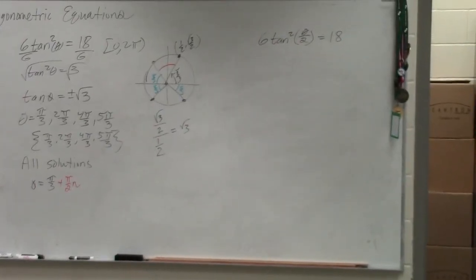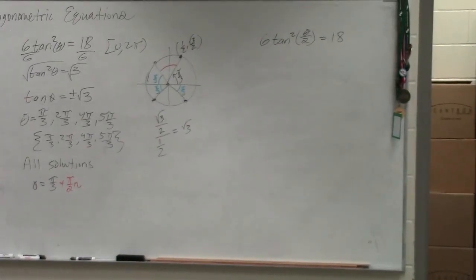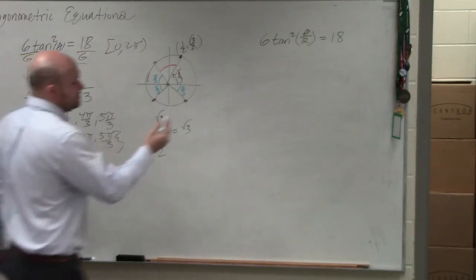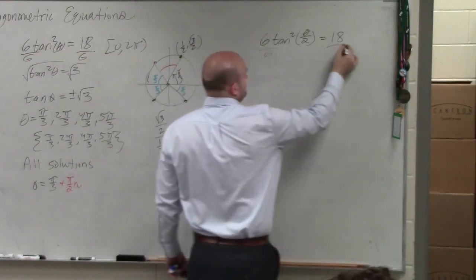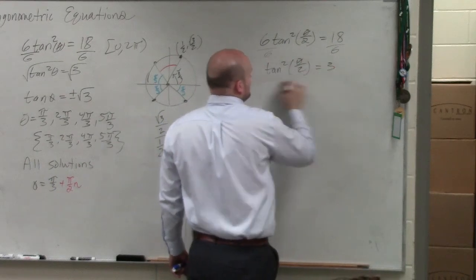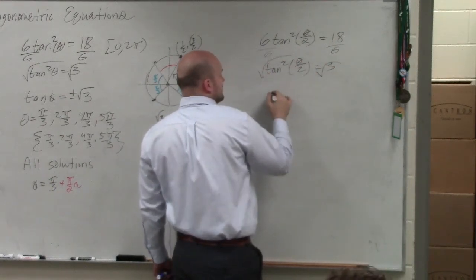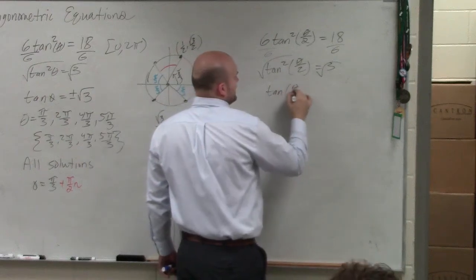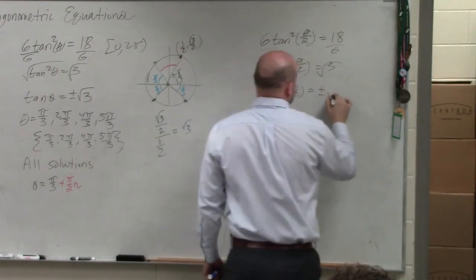You're basically doing the exact same thing. Dividing by 6. Get tangent squared of theta divided by 2 equals 3. Square root. Tangent of theta divided by 2 equals plus or minus the square root of 3.